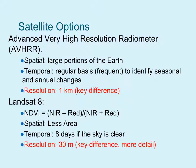Here are a couple of satellite options. One option is the Advanced Very High Resolution Radiometer — AVHRR — which covers large portions of the earth and is fairly frequent, and it can be used to identify seasonal and annual changes. The key difference between AVHRR and Landsat 8 is that the resolution for AVHRR is about 1 kilometer, whereas Landsat 8 is about 30 meters.